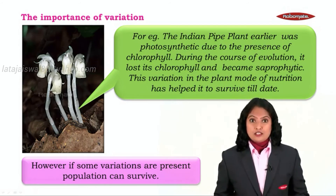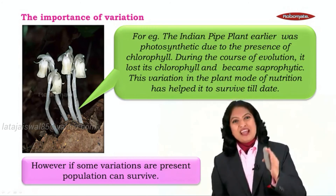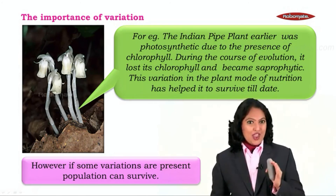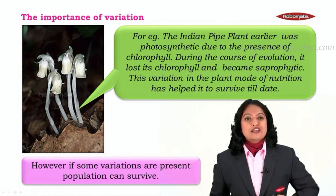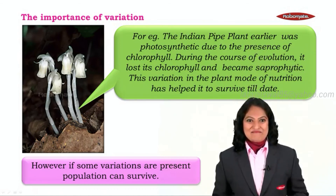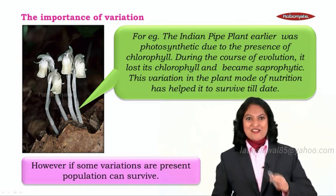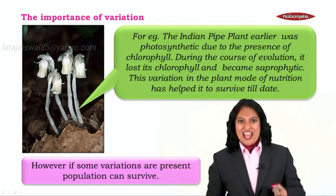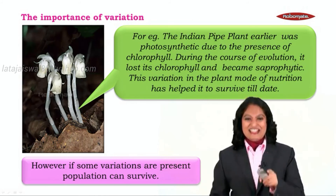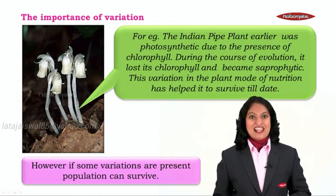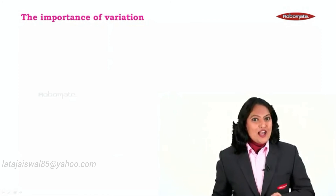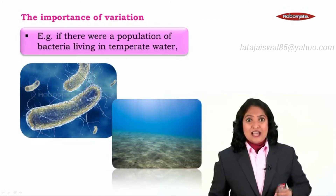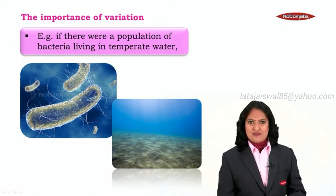This could have wiped out the plant from the face of earth. However, the plant converted itself to saprophytic mode of nutrition rather than photosynthetic. This variation of saprophytic mode has indeed helped the plant to stay alive today. It is so beautiful that variations help organisms to survive.